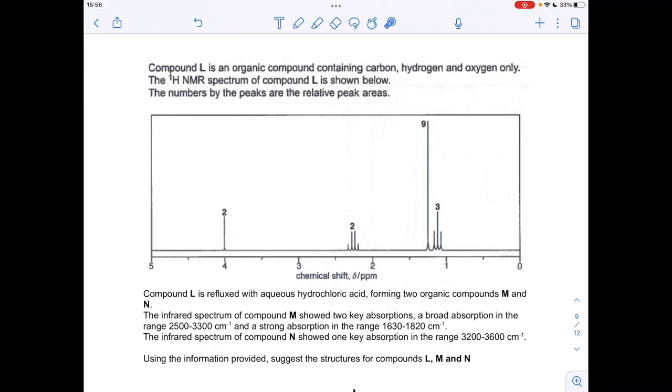So we'll just go through the motions with this signal, even though we know what L is. So we've got a triplet at about 1.1 ppm. That means there's an adjacent CH2 group. Area of 3 means it's a CH3 group that's caused the signal, and the shift value is H to C to R.